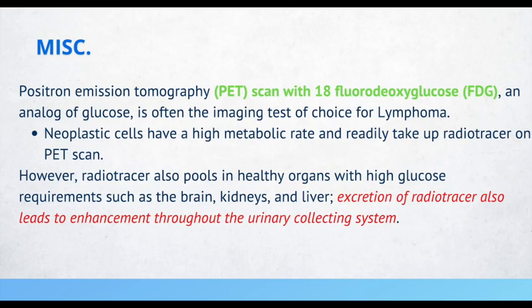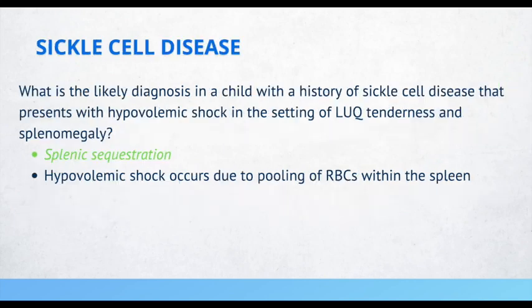If a patient does a PET scan with FDG, neoplastic cells have a high metabolic rate and take up the tracer. Because the radioactive tracer is excreted through the kidneys, it builds up and enhances the urinary collecting system. A topic examiners love to test on Step 1, Step 2 CK, and Step 3 is sickle cell disease, so let's go through some high yield facts.